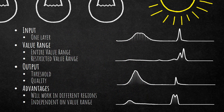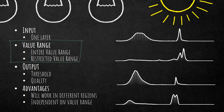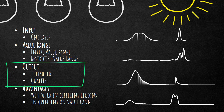This algorithm requires a single input layer. In the parameters you can also change the value range — you can compute it on the entire value range, restrict it to a certain range, or define the min and max values. As output it creates two variables: a threshold variable and a quality variable. The quality gives information about how good the threshold is, and the threshold can be used for segmentation.